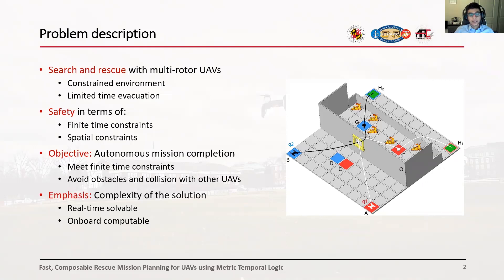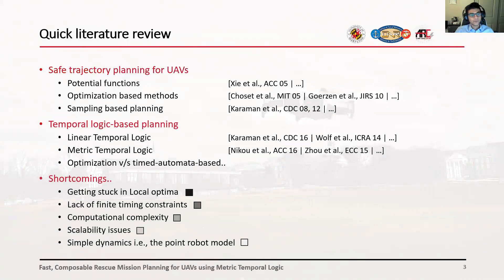Starting with the problem description, we tackle a time-critical search and rescue mission with multi-rotor UAVs in a constrained environment. We deal with safety in terms of both finite time constraints and spatial constraints, and the objective is to complete the mission autonomously while avoiding obstacles and collisions among the UAVs themselves and meeting the finite time constraints. We put special emphasis on the complexity of the solution because we want it to be real-time solvable and onboard computable.